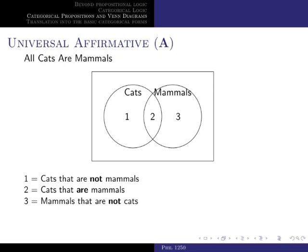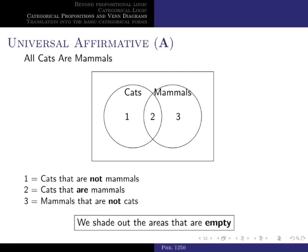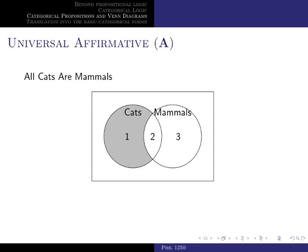With this setup, how do we represent a universal affirmative proposition? In this case, 'All cats are mammals.' When we say all cats are mammals, we mean you're never going to find a cat that isn't a mammal — so the set of cats that are not mammals is empty. That set is represented by area one, so we indicate that area one is empty by shading it. We shade area one, which is the set of cats that are not mammals.